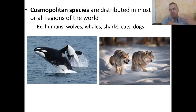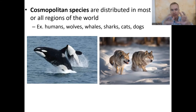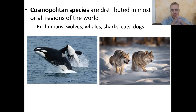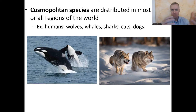Before we get into the different zoo regions and go one by one through them, let's talk about a couple of terms to describe species distribution. If you say something is a cosmopolitan species, that means that species is distributed in most or sometimes all areas of the world, depending on the species.